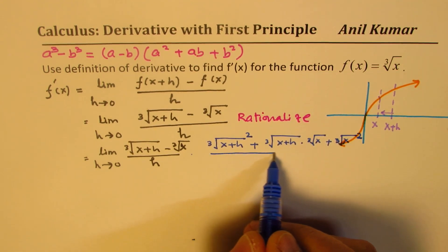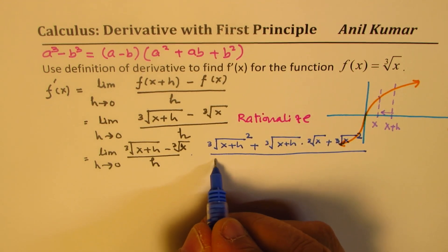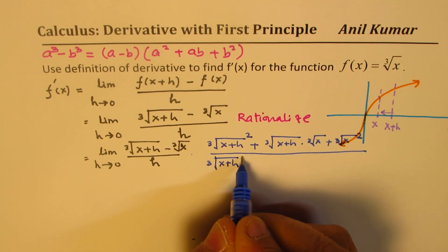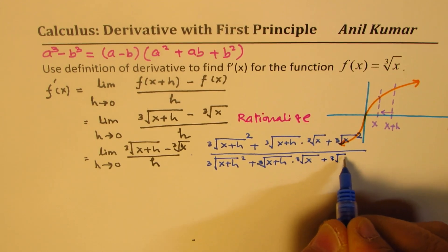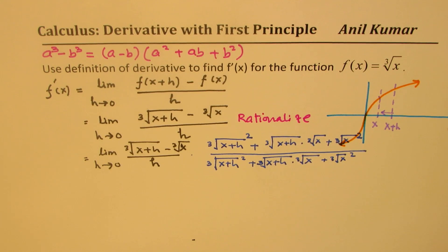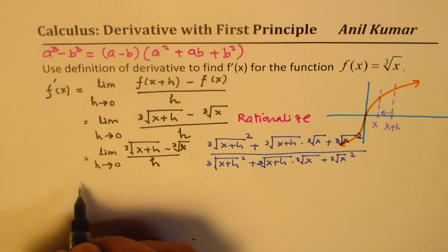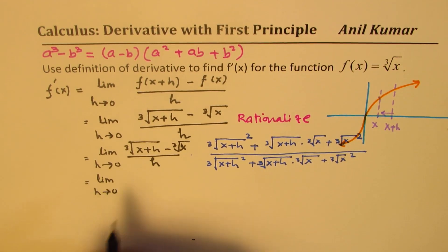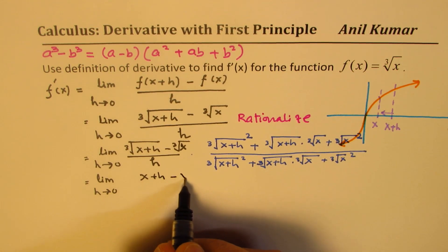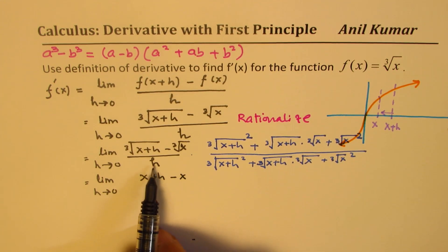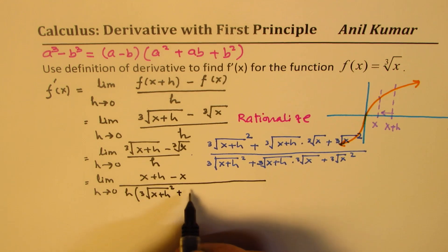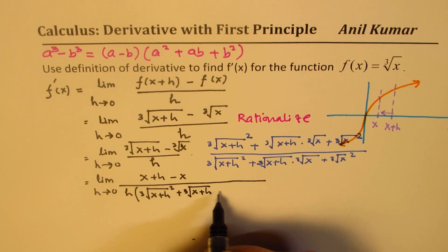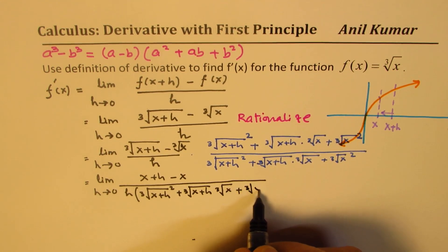So that is the expression you need to rationalize. What we get in the denominator is the same expression: (∛(x+h))² plus ∛(x+h) times ∛x, plus (∛x)². Now when you rationalize, you get a difference of cubes — a cube minus b cube. So we can write this as: limit as h approaches 0. The difference of cubes gives you (x+h) minus x in the numerator, and in the denominator you get h times all this: h times [(∛(x+h))² + ∛(x+h)·∛x + (∛x)²].